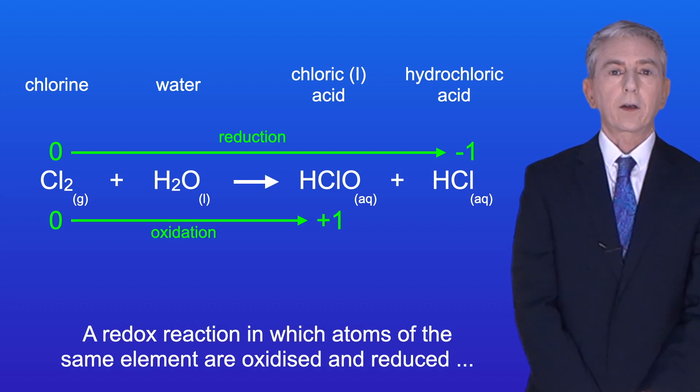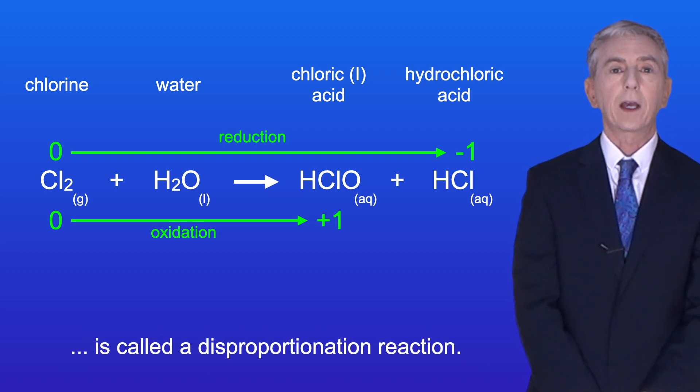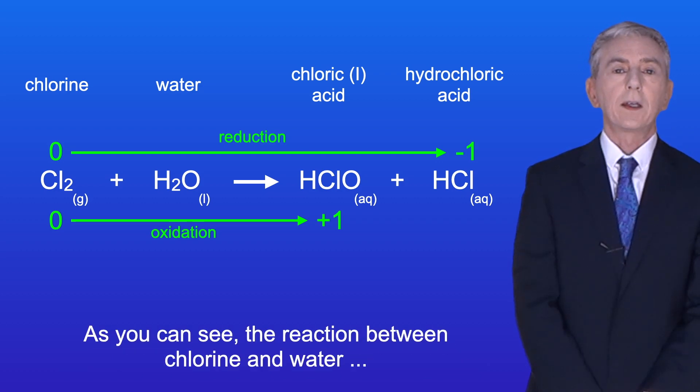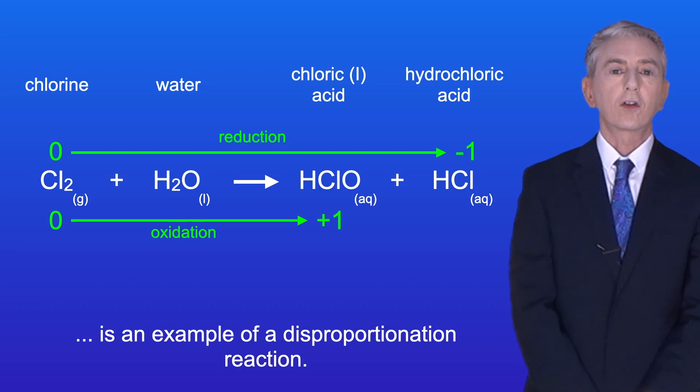Now a redox reaction in which atoms of the same element are oxidized and reduced is called a disproportionation reaction. And as you can see the reaction between chlorine and water is an example of a disproportionation reaction.